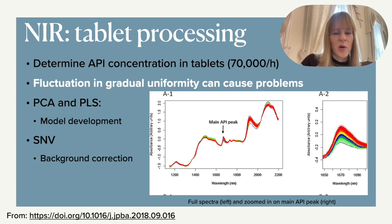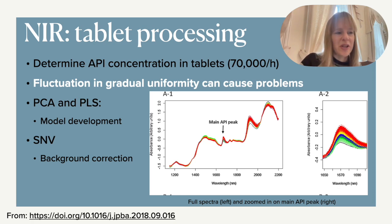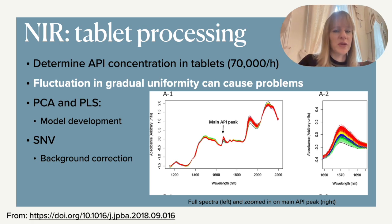You don't just have to screen your compounds — you can get through a very large volume very quickly. In this case they looked at the active pharmaceutical ingredient within those tablets to quantify it, and it needs to be within a specific range to pass quality control. A big problem with tablets — think of paracetamol or aspirin — is that the composition might not be exactly uniform, so there can be a distribution of the API within the tablet, which can cause problems if you're sampling only one specific area.